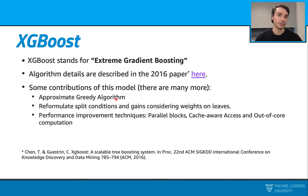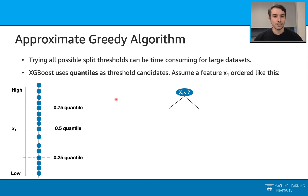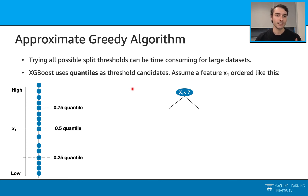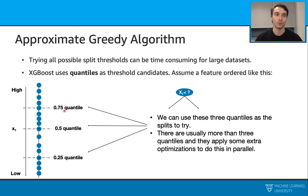Let's talk about this approximate greedy algorithm. If you remember when we first introduced decision trees, we said that when selecting split conditions to find the optimum ones, we consider all possible values — we can call this a greedy algorithm. Here, with the approximate greedy algorithm, we only consider quantiles as our threshold candidates. For example, with a feature x1, we first order the data points, then take the 0.25, 0.5, and 0.75 quantiles as three threshold candidates. In practice we will have more than three, and this library also uses extra optimization to run this in parallel.